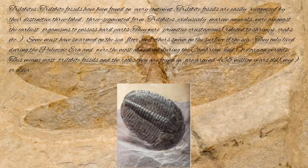Trilobites. Trilobite fossils have been found on every continent. They are easily recognized by their distinctive three-segmented form. Trilobites were exclusively marine animals and were among the earliest organisms to possess hard parts. They were primitive arthropods; some crawled on the sea floor while others swam on the surface. They only lived during the Paleozoic era and were most abundant during the Cambrian and Ordovician periods. This means most trilobite fossils and the rocks they are found in are around 438 million years old or older.